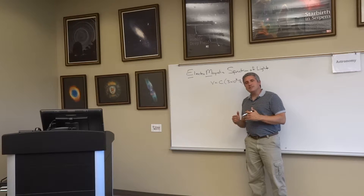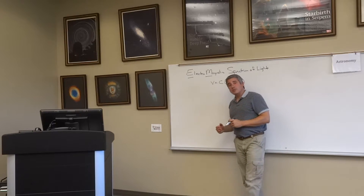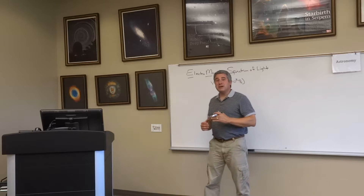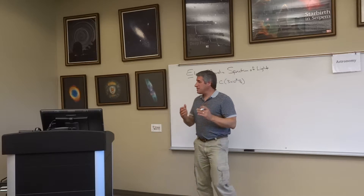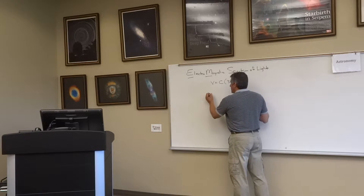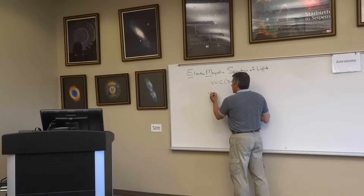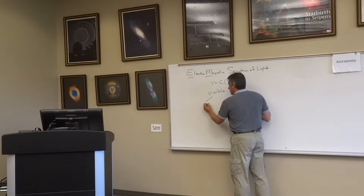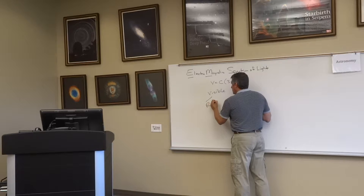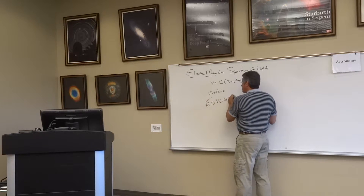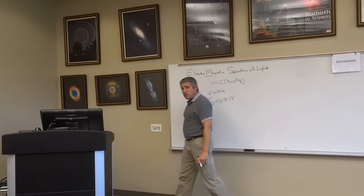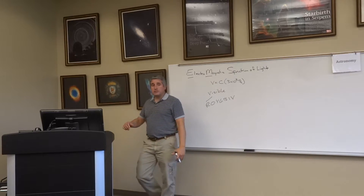How are different types of light different? You and I think of light as visible light — all the colors of the rainbow: Roy G. Biv — red, orange, yellow, green, blue, indigo, violet. All the colors of the rainbow.